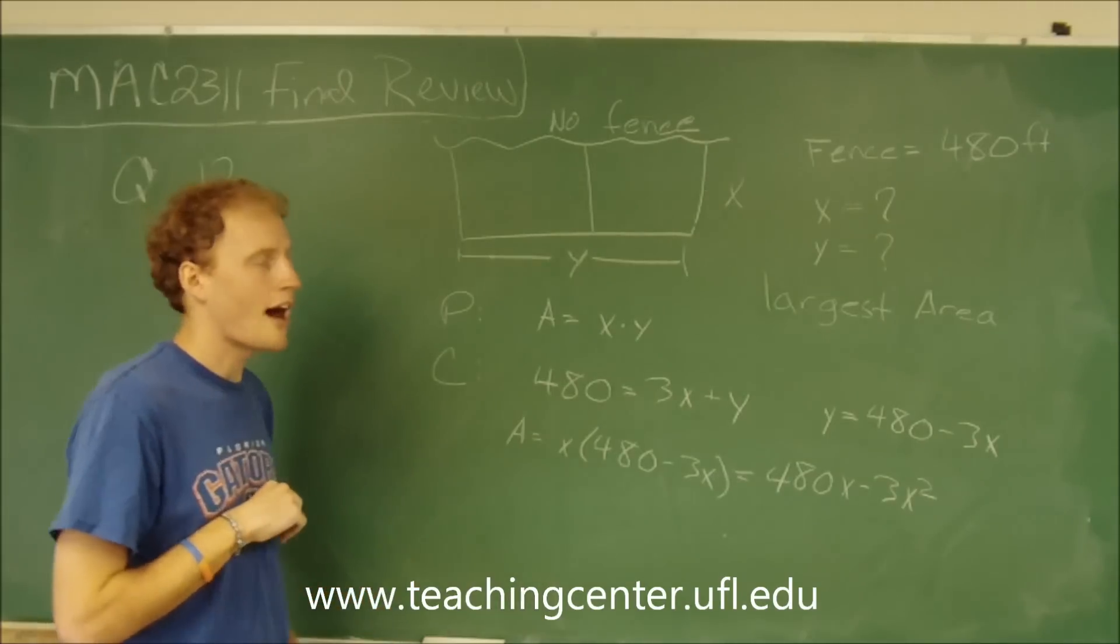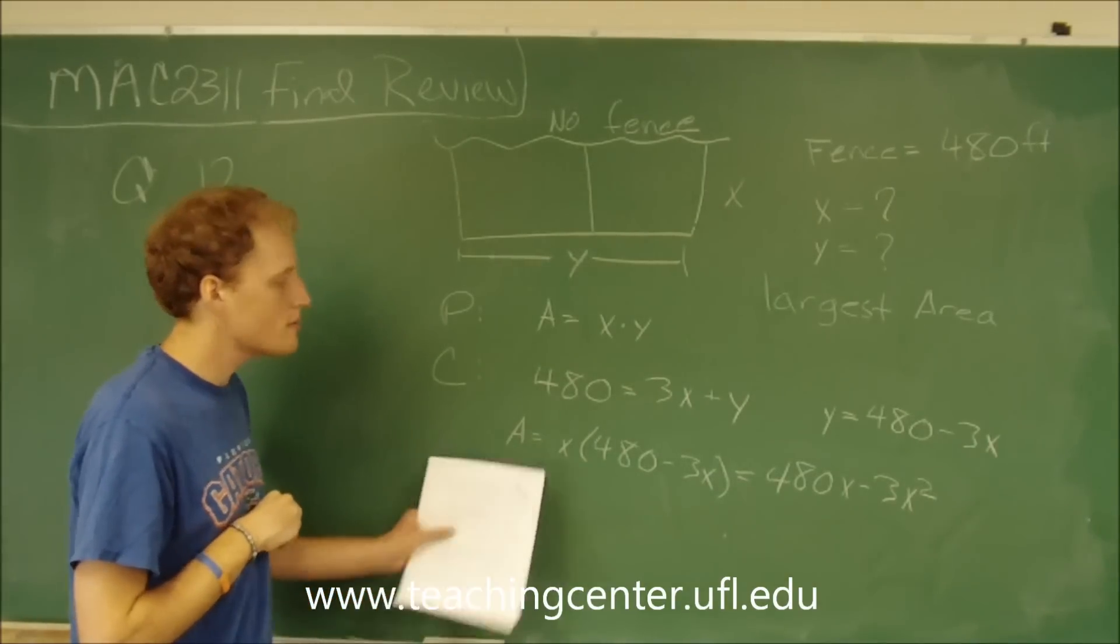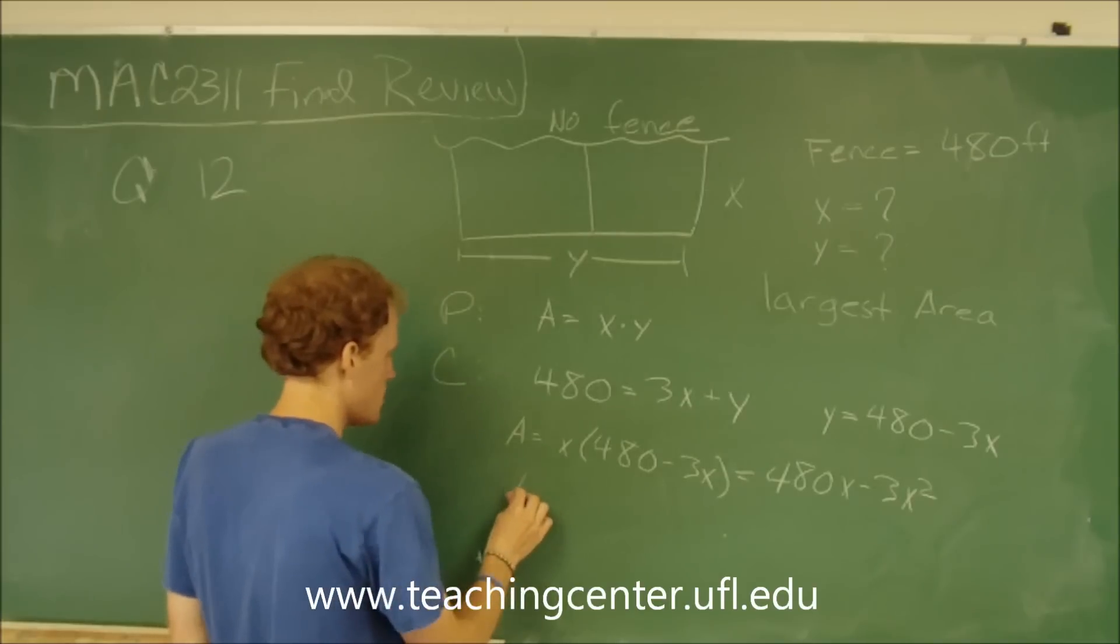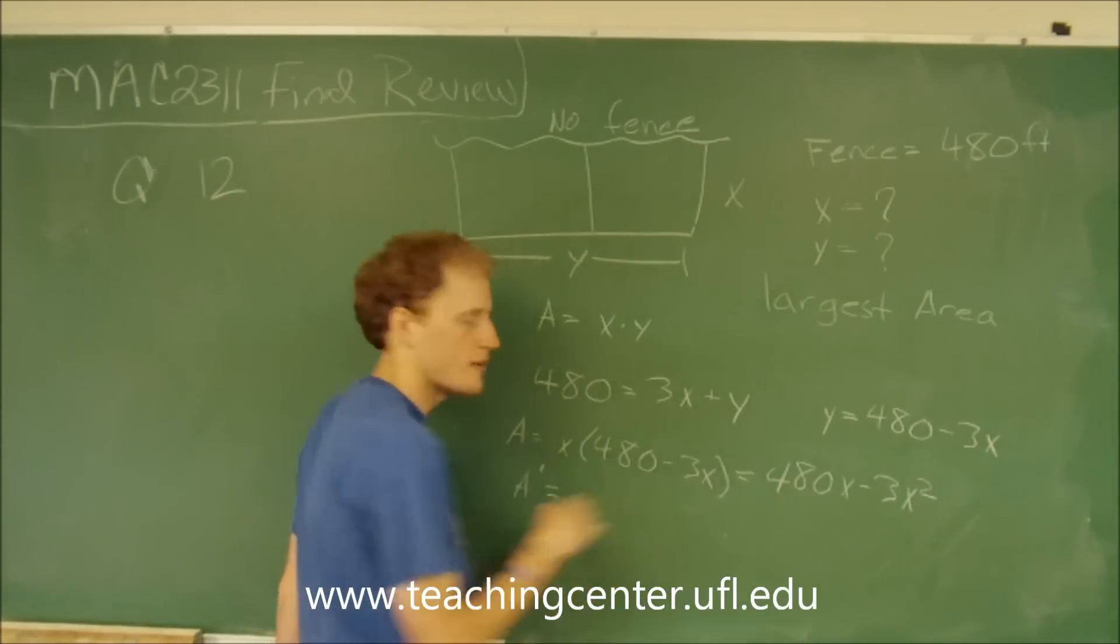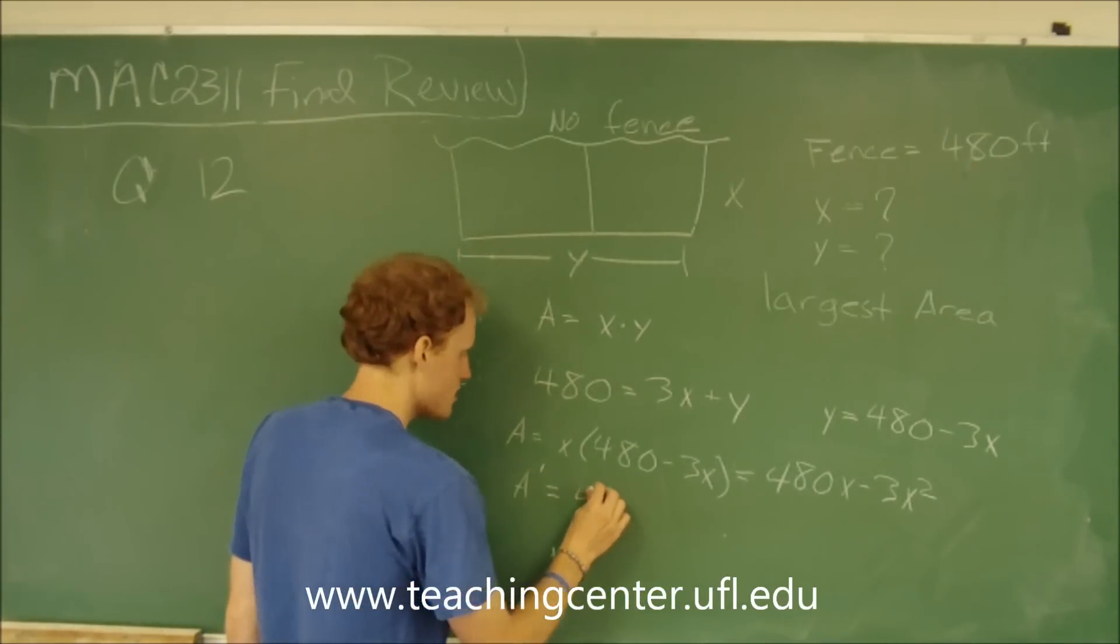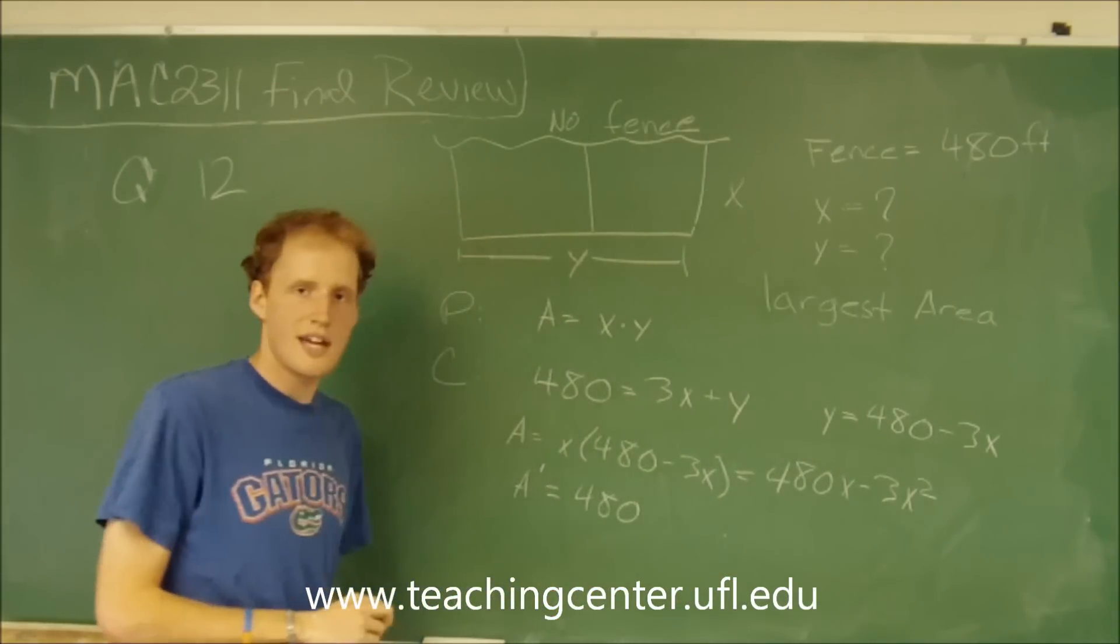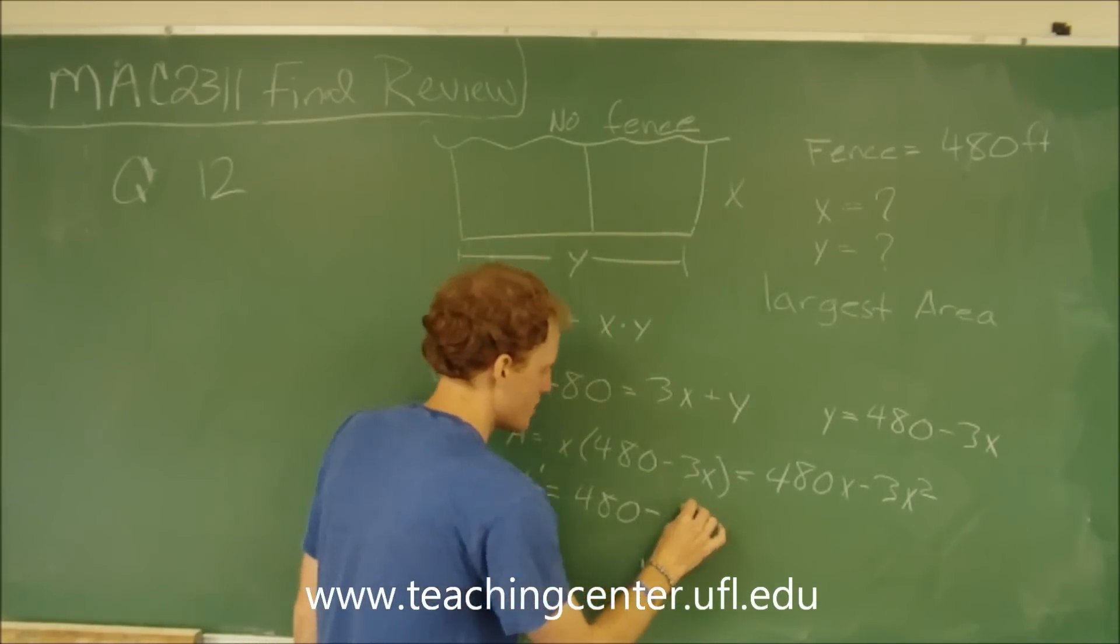So now to optimize it, we have to take the derivative of this. So the derivative of this equation is going to equal the derivative of 480x, which is 480, minus the derivative of 3x squared, which is 6x.